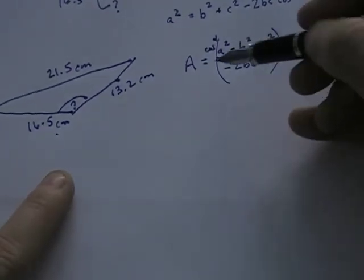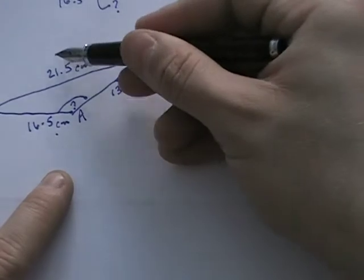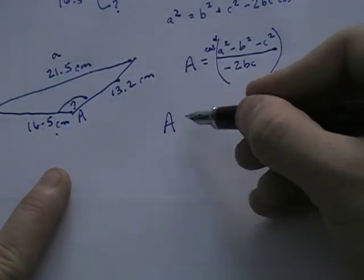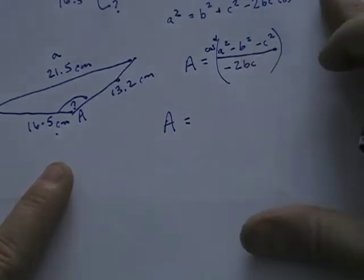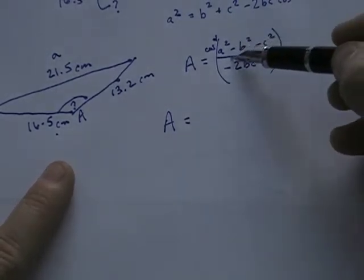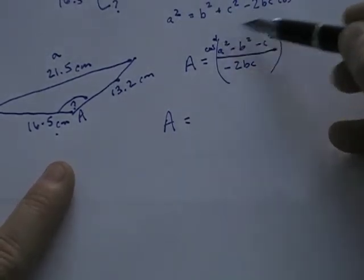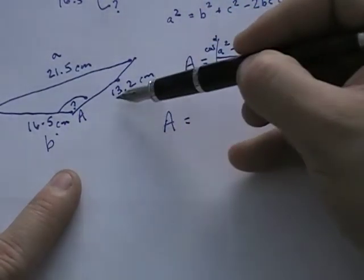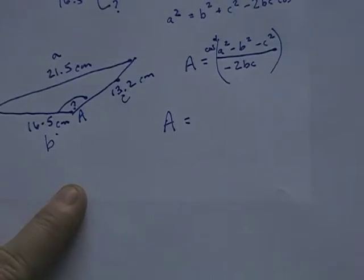Now the only trick to remember here is if this is angle A, this is side a and then b and c don't really matter. So if I want to solve for angle A, all I have to do is actually take these numbers a, b and c, and plug them in.